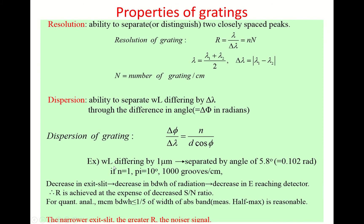As an example: wavelengths differing by one micrometer are separated by an angle of 5.8 degrees (0.102 radians) when n equals 1 (the strongest diffraction order), phi is 10 degrees, and there are 1000 grooves per centimeter. This dispersion is sufficient for ordinary spectroscopy.